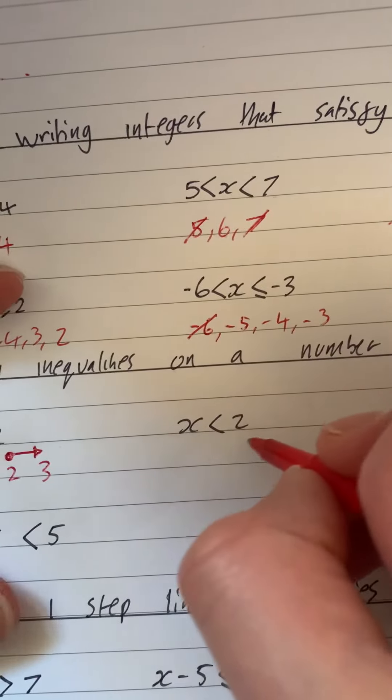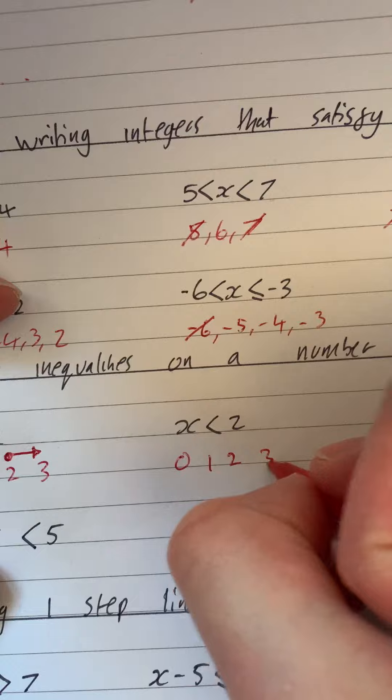And it's saying x is greater than two, so we draw a little arrow to all the numbers greater than two.